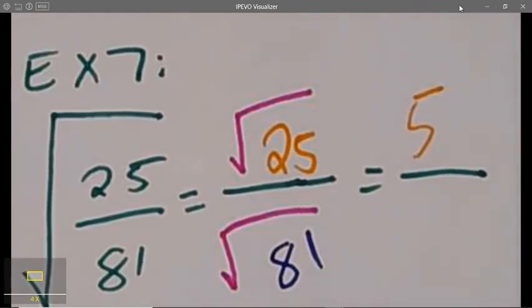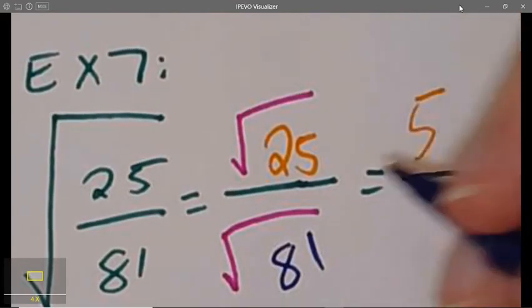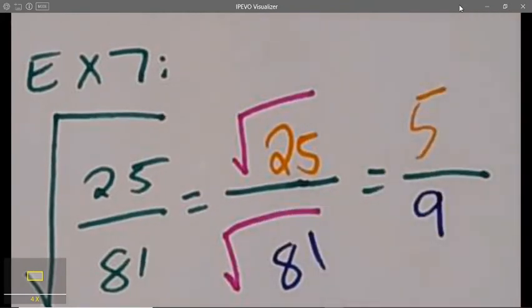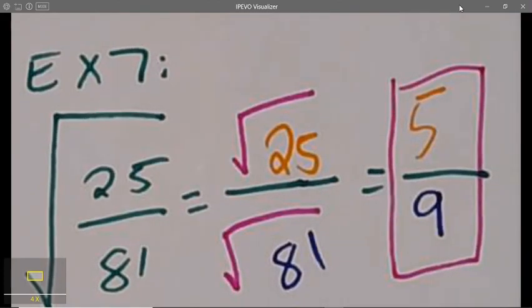And what is the square root of 81? What times what gives you 81? That's the same number. Exactly, you guys, it would be 9. So, the square root of 25 over 81 is 5 ninths. Way to go, you guys.